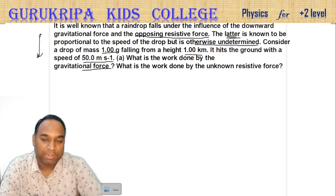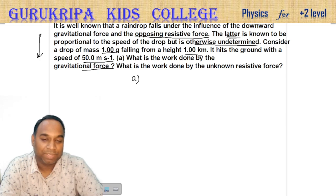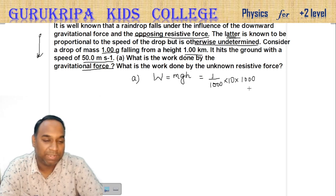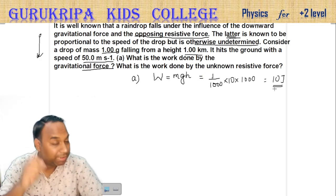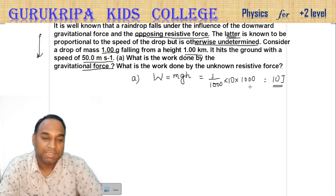What is the work done by the gravitational force? The work done by gravitational force is m×g×h. Mass is 1 gram, one by one thousand, times g value 10, times height value 1 kilometer. That is equal to 10 joules. Gravitational force: simple, 10 joules.